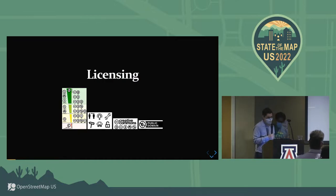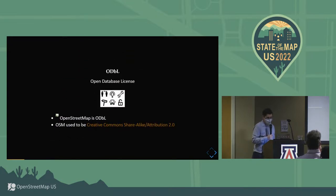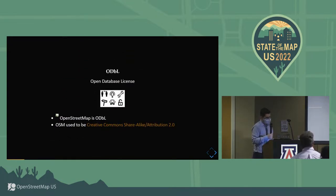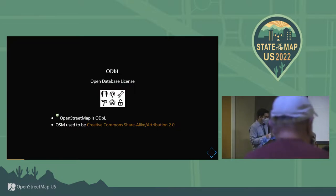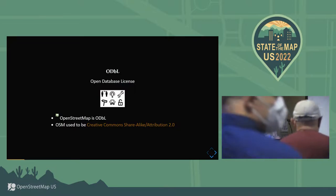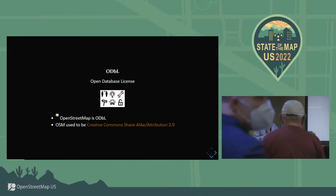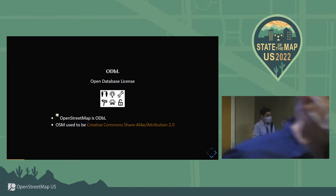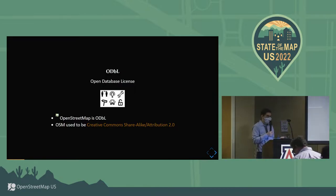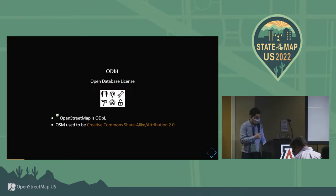These are just pictures of different kinds of licenses. So OvertureMap is in ODBL. It used to be in Creative Commons at one point. They switched it over because Creative Commons didn't work very well with databases, but ODBL is supposed to be better.